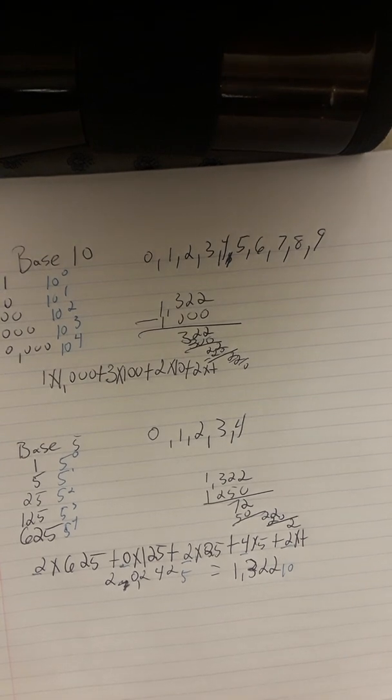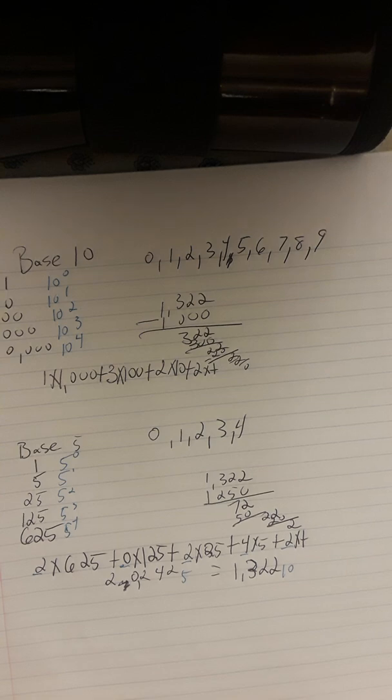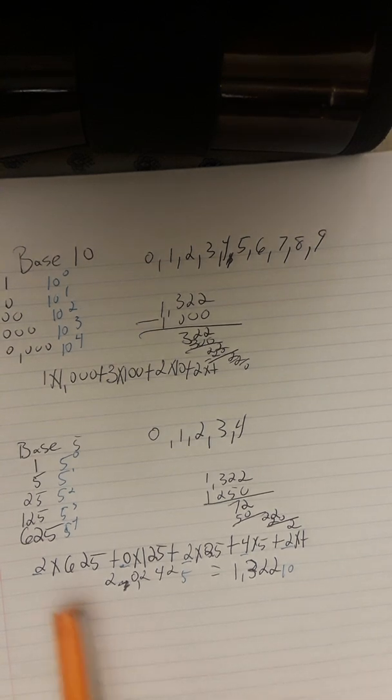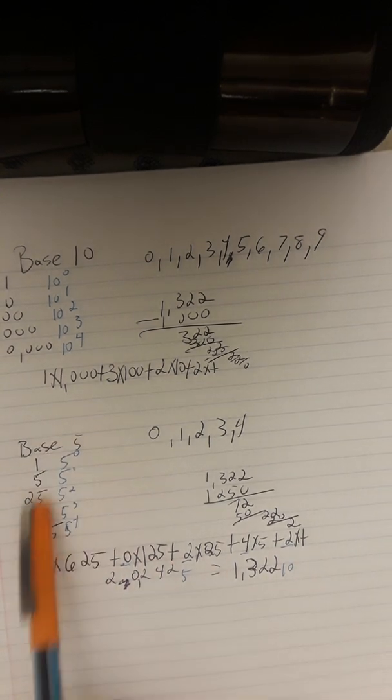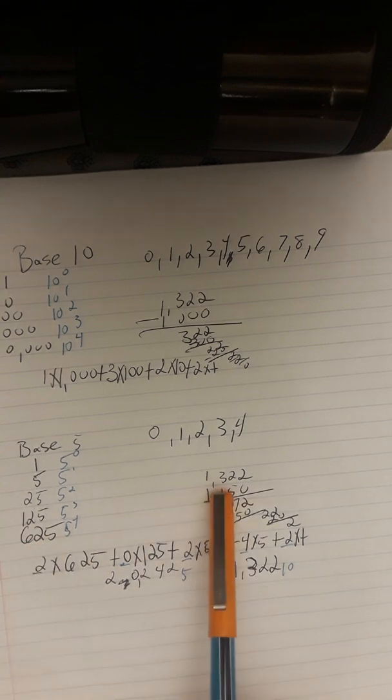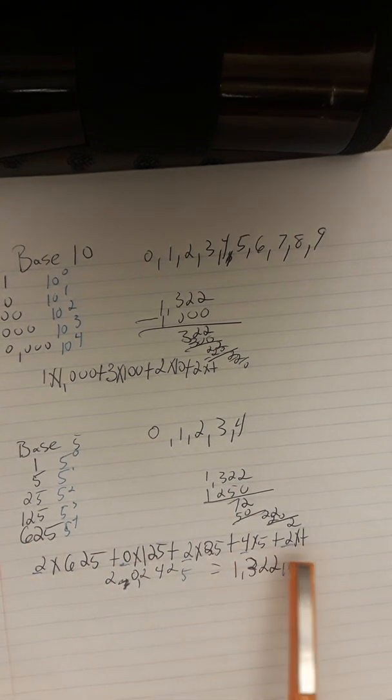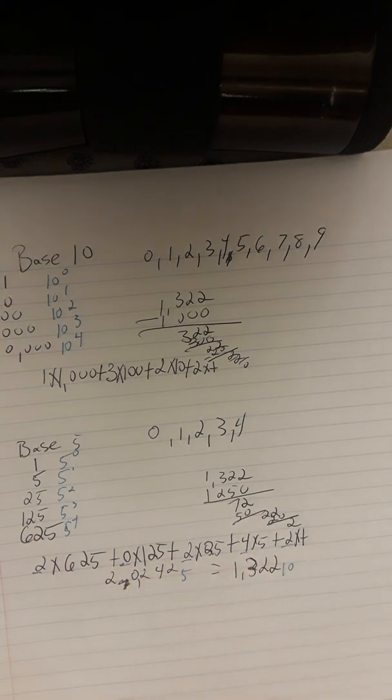You're going to see that the numbers in base 5, when they have an equivalence, the numbers in base 10, they're going to be a lot bigger. And that's pretty much it. All you have to do is write down how many times these go into the number, and then you just kind of copy these first digits, and that's it.